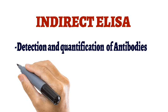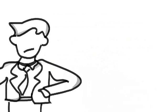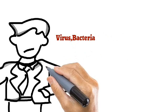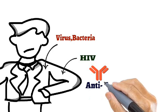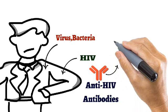The technique is popularly used to detect anti-HIV antibodies present in the patient's serum. Whenever any person is infected with a virus, bacteria, or any other kind of infectious agent, his body produces antibodies against it. So if the person is infected with HIV, his body is going to produce anti-HIV antibodies, and these antibodies can be detected in the serum of that person by indirect ELISA.